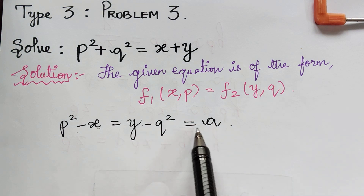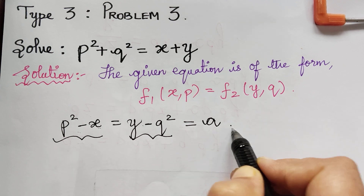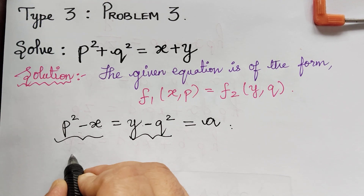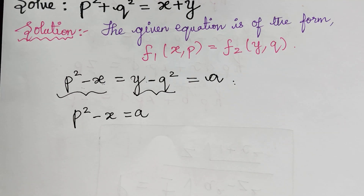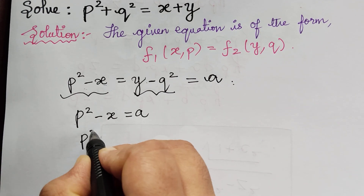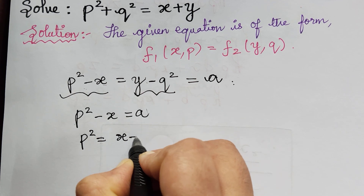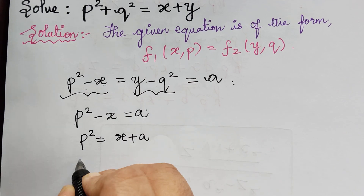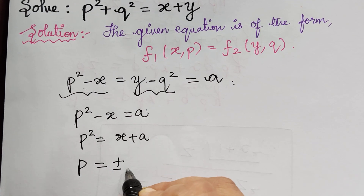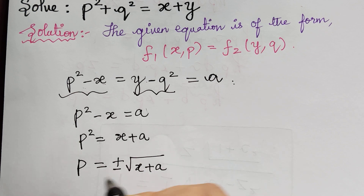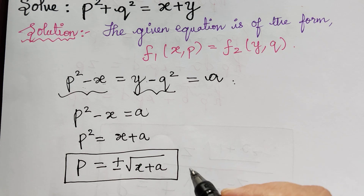Therefore, when this equation is equal to the constant a, each side will be equal to a. So, p squared minus x will be equal to a. From this, p squared will be equal to x plus a, and therefore the value of p, taking square root on both sides, becomes plus or minus square root of x plus a.